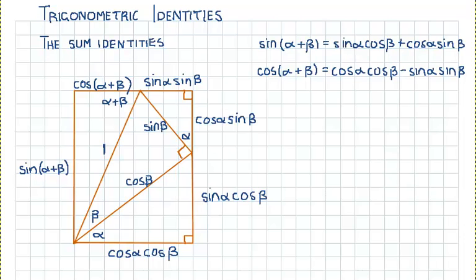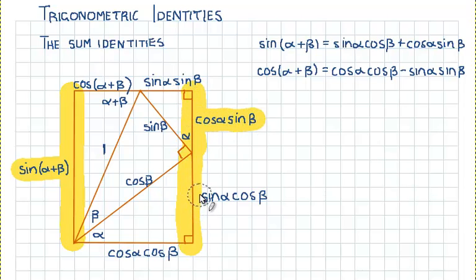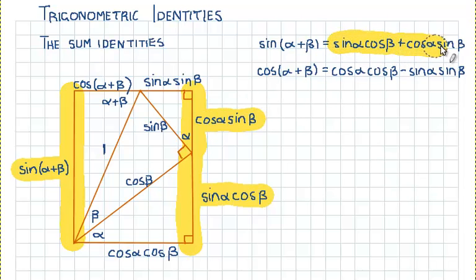Now that we've labelled all the lengths, we can assemble the formulas. We'll start with sin(α + β). The length of that side equals the length of this other side, which is cos α sin β, plus sin α cos β. So sin(α + β) = sin α cos β + cos α sin β.